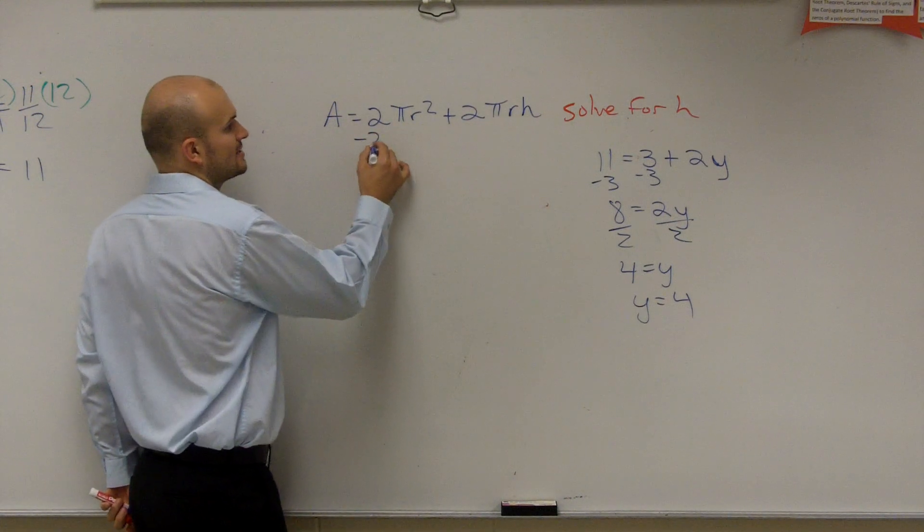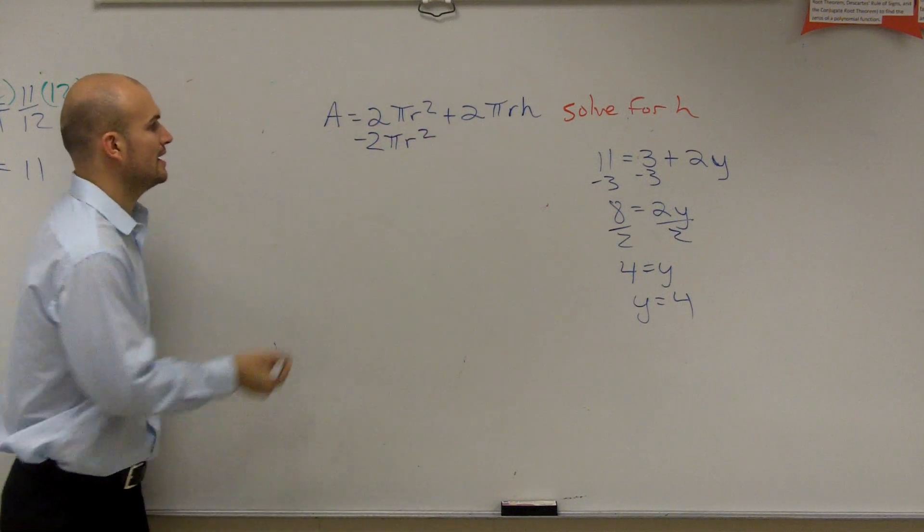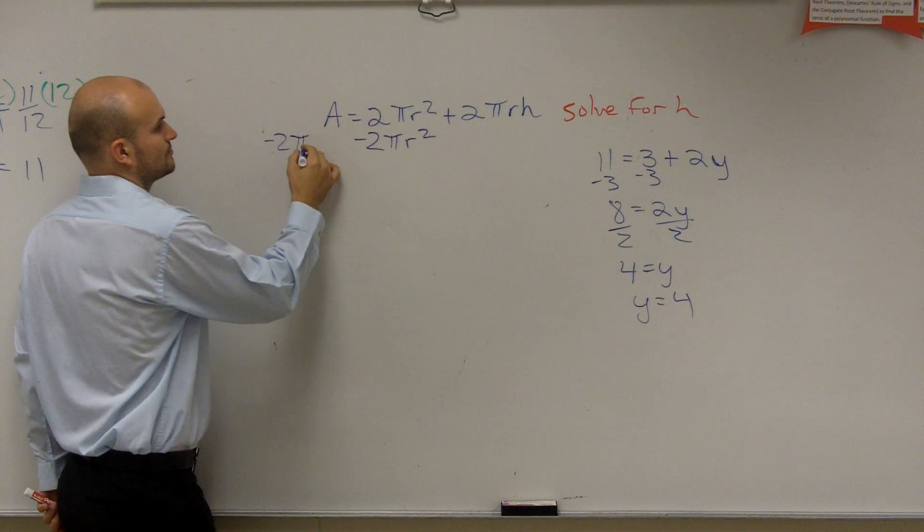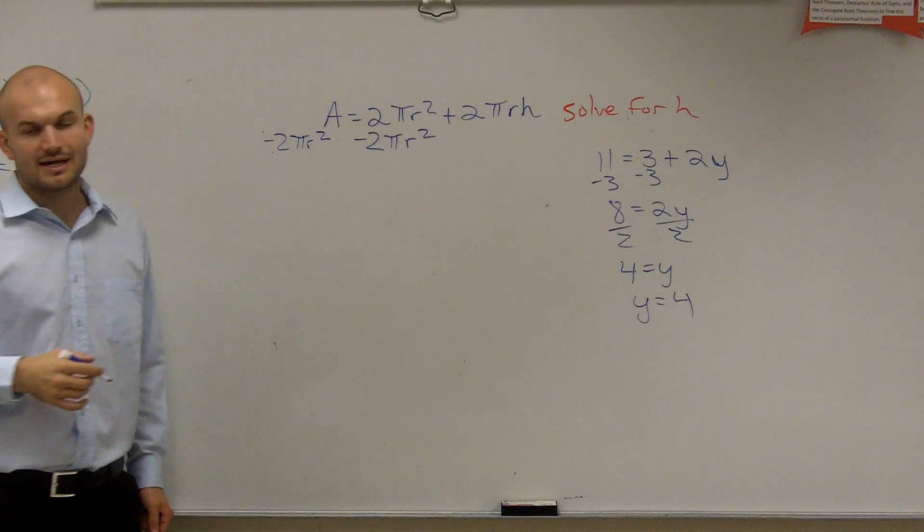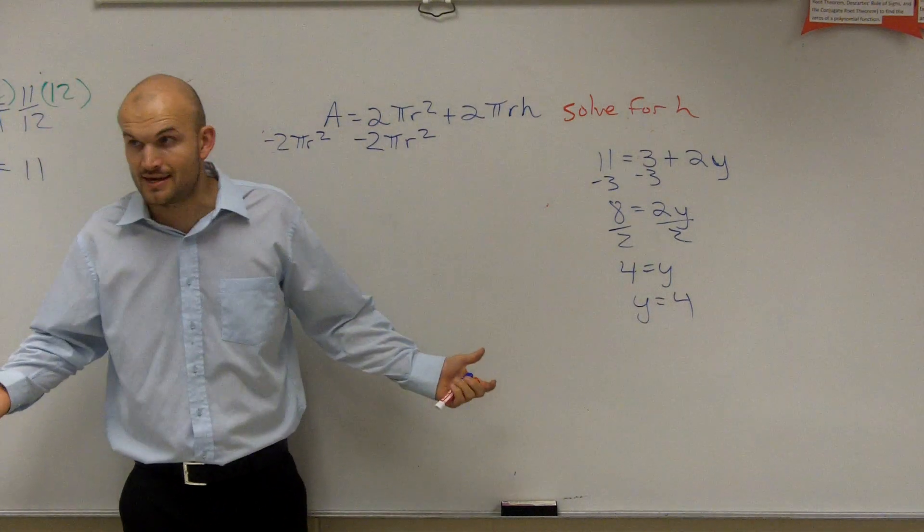So to undo that, I need to subtract 2 pi r squared. And I undo that on both sides. And this is where a lot of students get confused. Because they like 11 minus 3 equals 8. They understand that.